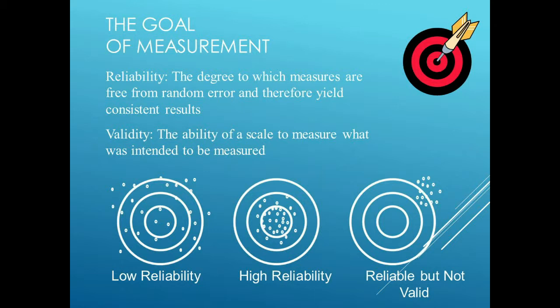All measurement really requires two major goals. First is reliability — the ability of something to produce consistent results over and over again. Second is validity, which ensures that whatever we're measuring represents the real world. If we're doing a survey, the results need to reflect what the true situation in the world actually is. We have an analogy here using a dart board to illustrate different types of dart players.